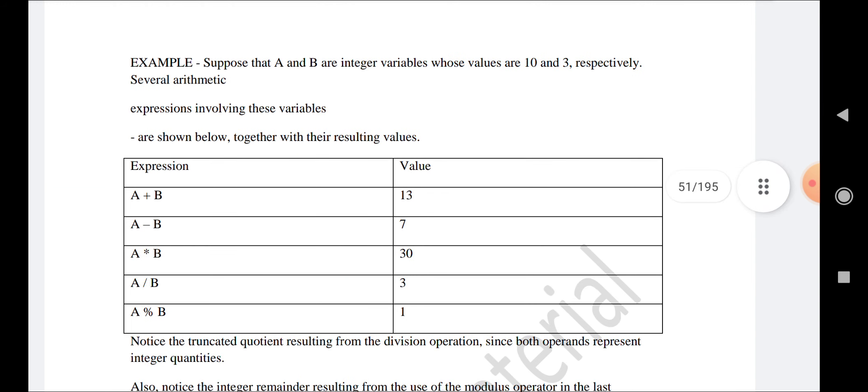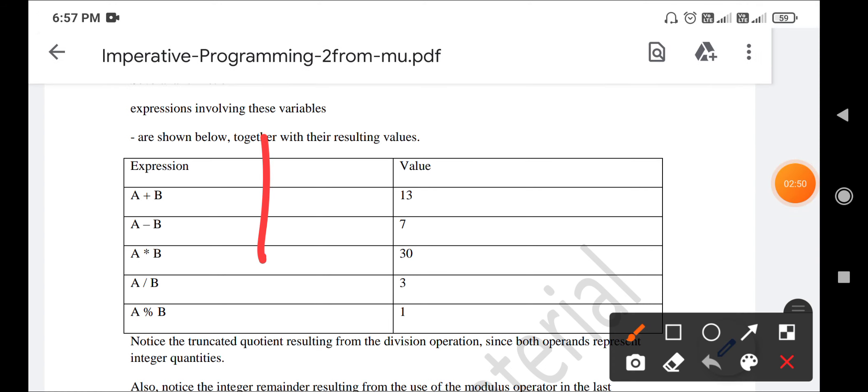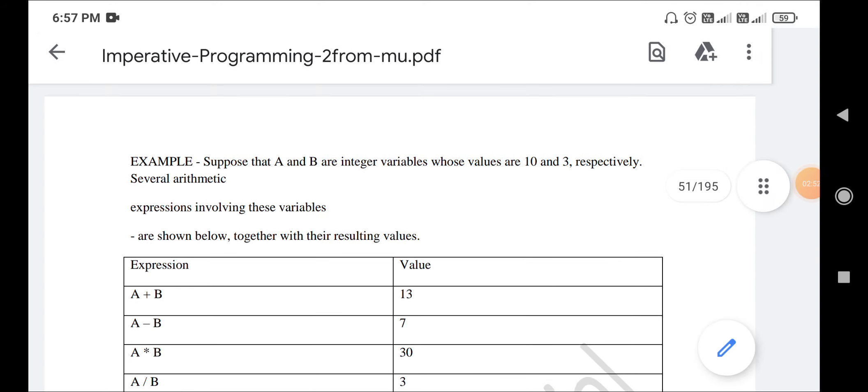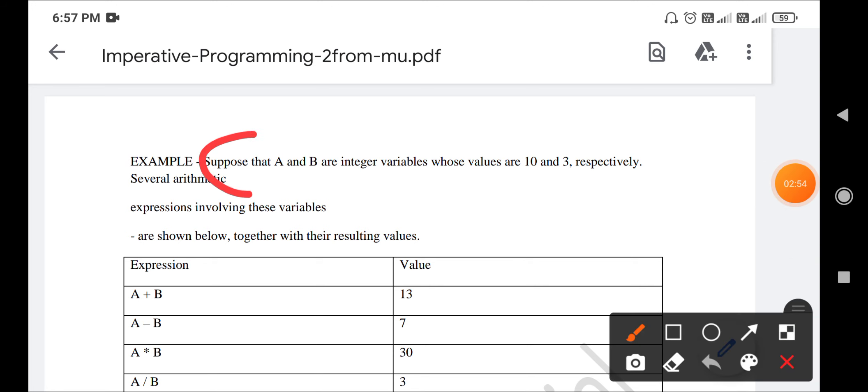for example, suppose we take a equals 10 and b equals 3 respectively. We will do some calculations using arithmetic operations. For expressions involving these variables: a plus b equals 13, a minus b equals 10 minus 3 equals 7,